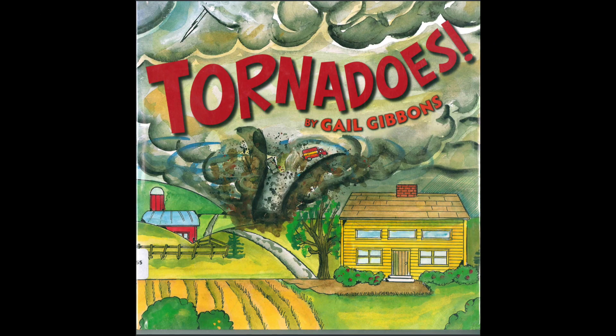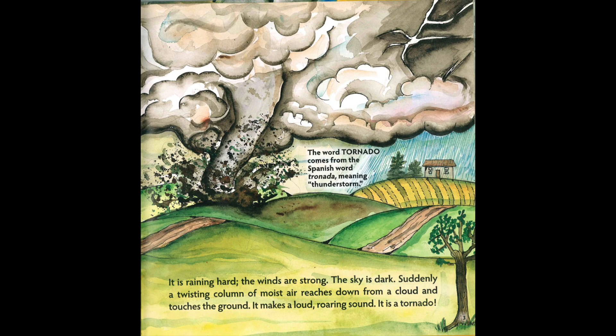Tornadoes by Gail Gibbons. It is raining hard. The winds are strong. The sky is dark. Suddenly, a twisting column of moist air reaches down from a cloud and touches the ground. It makes a loud, roaring sound. It is a tornado.